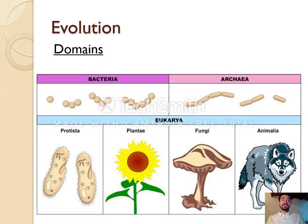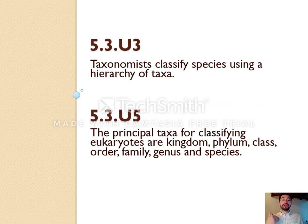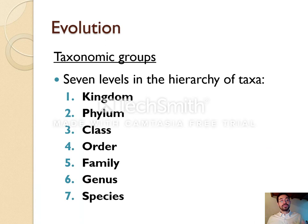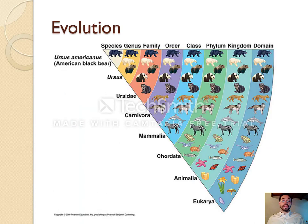Under these domains, there are seven more levels. Taxonomists classify species using this hierarchy: domain, kingdom, phylum, class, order, family, genus, species — where genus and species are the ones used for binomial nomenclature.